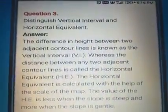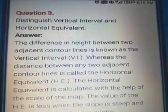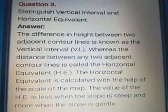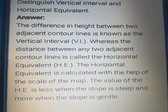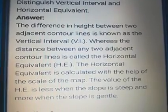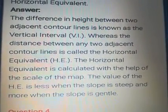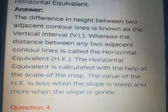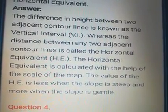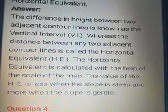Third question: Distinguish vertical interval and horizontal equivalent. The difference in height between two adjacent contour lines — you already studied the steep slopes and gentle slopes — is known as vertical interval. Whereas the distance between any two adjacent contour lines is called horizontal equivalent, or HE. The horizontal equivalent is calculated with the help of scale on the map. The value of HE is less when the slope is steep and more when the slope is gentle. Now we can move to the next question.